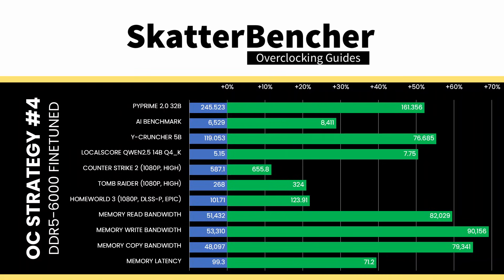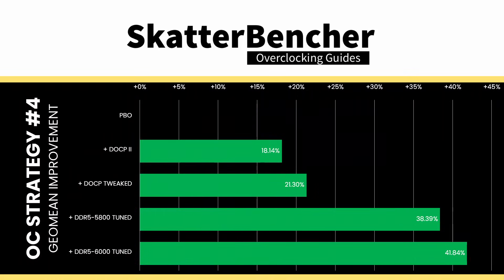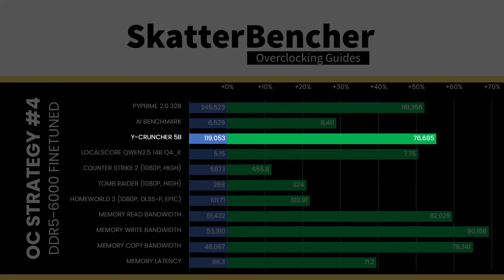We re-ran the benchmarks and checked the performance increase compared to the default operation. Fine-tuning the memory timings should, in theory, provide additional performance. However, the changes we made are so minor that we shouldn't expect big swings. The GeoMean performance speedup improves by another 3 percentage points, and we get a maximum benchmark improvement of plus 55.25% in Y-Cruncher.